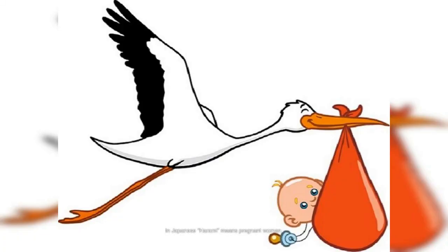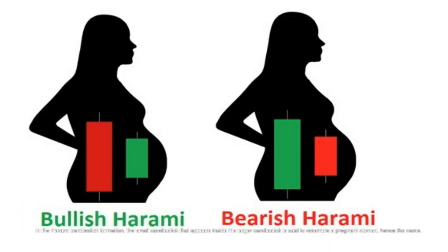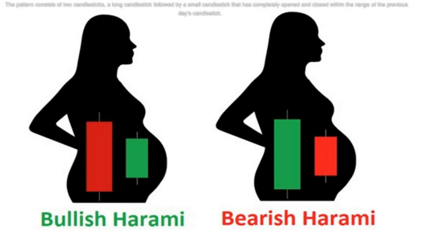In Japanese, Harami means pregnant woman. In the Harami Candlestick Formation, the small candlestick that appears inside the larger candlestick is said to resemble a pregnant woman, hence the name. The pattern consists of two candlesticks: a long candlestick followed by a small candlestick that has completely opened and closed within the range of the previous day's candlestick.